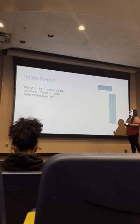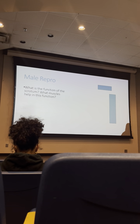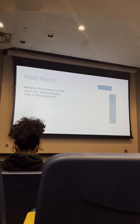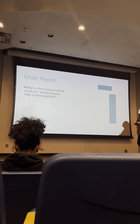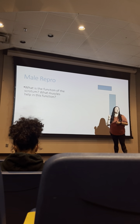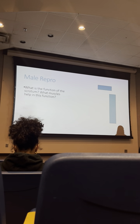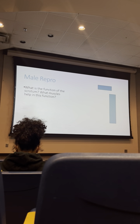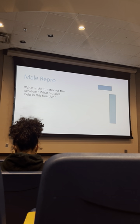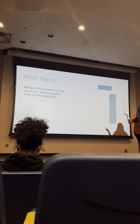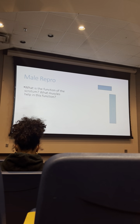The function of the scrotum is to regulate temperature, because sperm cells cannot survive at core body temperature. Two muscles help regulate temperature: the dartos muscle, which is superficial just under the skin, and the cremaster muscle, which covers the spermatic cord to elevate the testes. Both dartos and cremaster help move the testes.